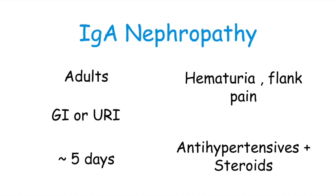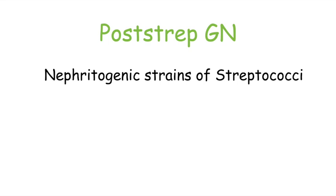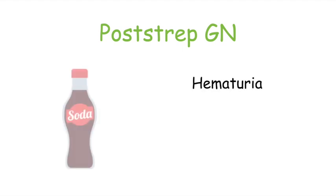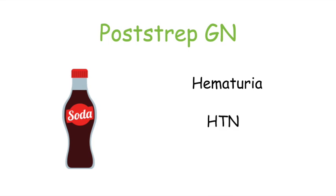Post-strep glomerulonephritis is caused by nephritogenic strains of streptococci. These patients usually have a prior pharyngitis or impetigo infection. Within one to four weeks of being infected, patients may develop hematuria, cola-colored urine, hypertension, edema, or oliguria. It's important to note that 50% of these patients may be asymptomatic.